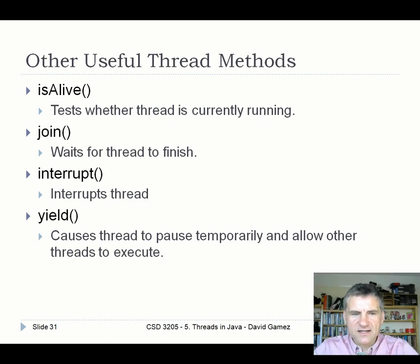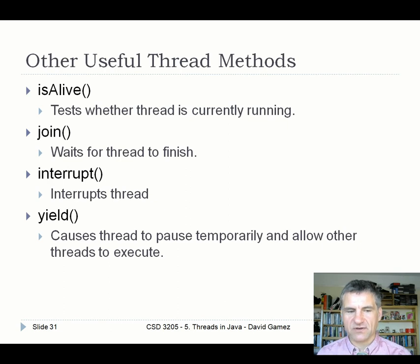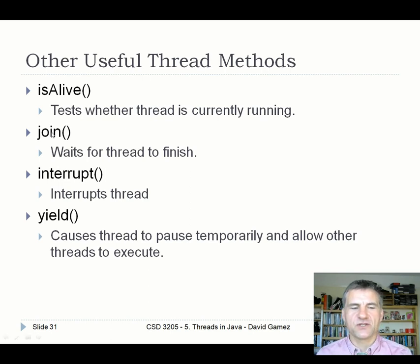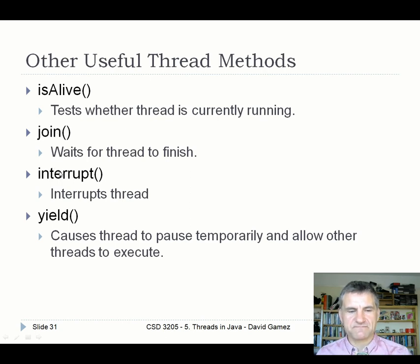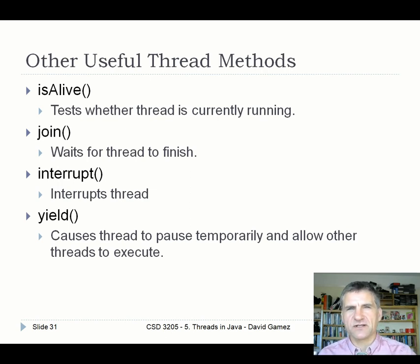The Thread class has several other useful methods. isAlive tells us whether the thread has been started and the run method is active. join is useful when your main application thread starts up other threads to do useful work and you want to wait for them to finish before closing the application — calling join on a thread blocks the calling thread until the other thread finishes execution. interrupt can break a sleeping thread out of its sleep. yield can pause a high-priority thread to give lower-priority threads a chance to execute.